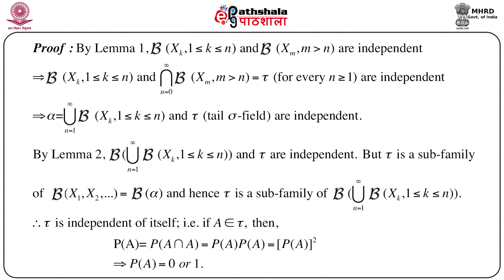This immediately implies that script B generated by X1, X2, ..., Xn and the intersection of script B generated by Xm for m > n — which equals τ, the tail sigma field — are independent for every n ≥ 1. Which implies that if we denote α as the union from n=1 to ∞ of script B of Xk for 1 ≤ k ≤ n, then α and τ are also independent.